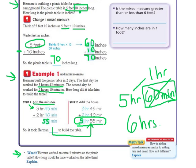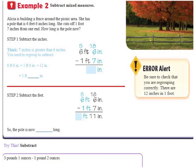Okay. Flip your page over to 484. And we're going to try example 2. This time, instead of adding, we're subtracting. Alicia is building a fence around the picnic area. She has a pole that is 6 feet 6 inches long. She cuts off 1 foot and 7 inches from one end. So how long is it now? So we're doing 6 feet 6 inches minus 1 foot 7 inches.